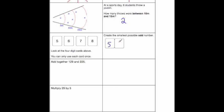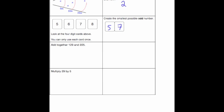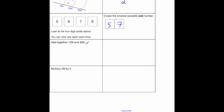The next question says to add together 129 and 225. Let's line them up in columns: 129 and 225, and put a plus sign under a line beneath it. 9 plus 5 is 14, so put the 4 down, carry the 1. 2 plus 2 is 4, plus 1 is 5. And finally 1 plus 2 is 3. So the answer is 354.